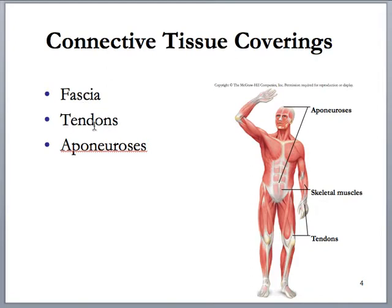Tendons are cord-like bundles of connective tissue that anchor and connect skeletal muscle organs to the skeleton itself. Tendons connect muscle to bone. An aponeurosis is a sheet of connective tissue that typically covers multiple muscles. Similar to a tendon, it helps connect multiple muscles to the skeleton, but it's a sheet rather than a cord. A tendon is like a cord; an aponeurosis is a sheet of connective tissue. All of these are made up of fibrous connective tissue.